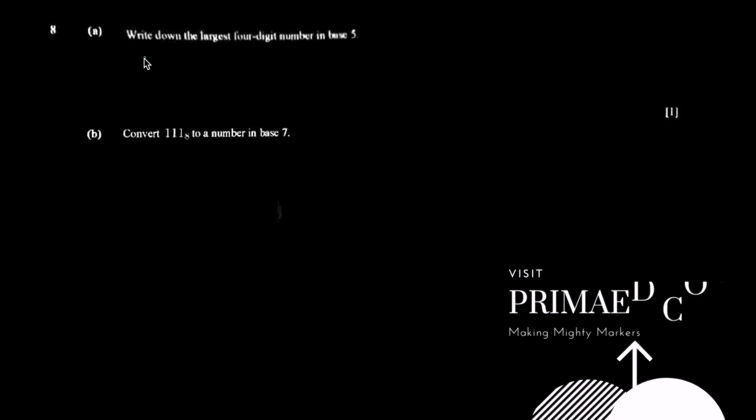We're still joined by Munashi and we're going to continue from question 8. You'll be asking questions on your behalf, which we think will be a helpful way for you to learn. So question 8a says: write down the largest four-digit number in base five.